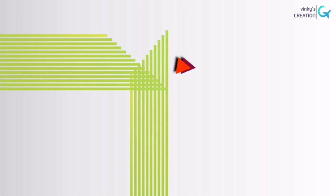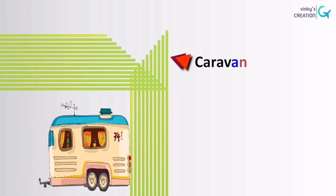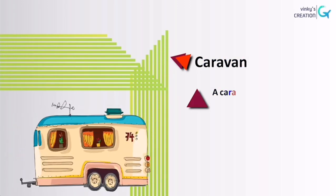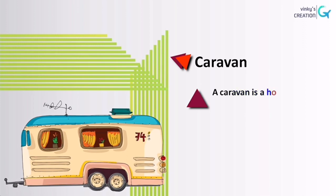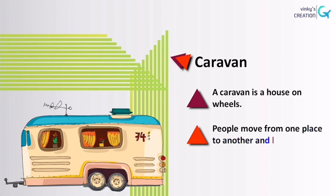Our next house is caravan. A caravan is a house on wheels. People move from one place to another and live in caravan.